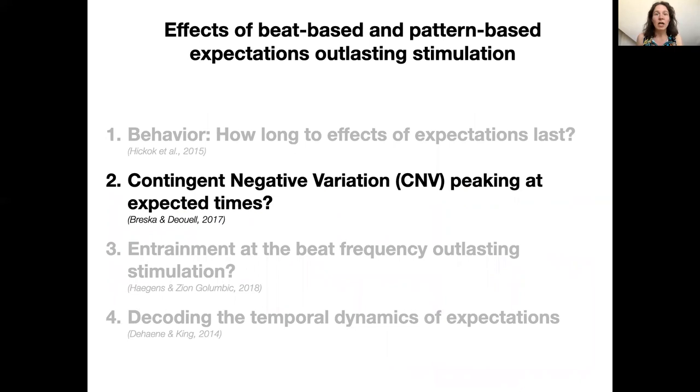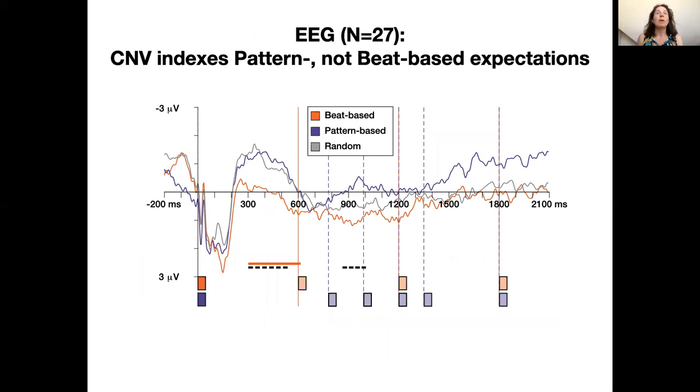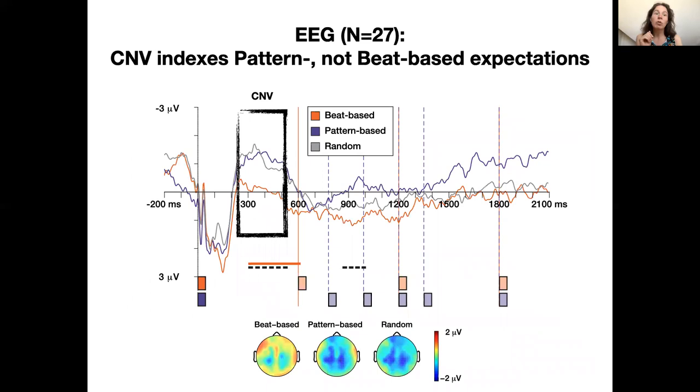In a second experiment, we recorded EEG from the silence period. First, we looked at a time domain event-related response associated with temporal expectations, the contingent negative variation or CNV. This ERP response is thought to peak at expected moments in time. This is the ERP for each condition. Time zero is the onset of the last tone of the rhythm. You can see a CNV-like deflection peaking between 300 and 450 milliseconds after the last tone for the pattern-based and random conditions, here in purple and gray. The scalp distributions indeed look like the central distribution that's normally seen for a CNV. There are two things I would like to highlight. First, there does not seem to be a CNV for the beat-based condition.